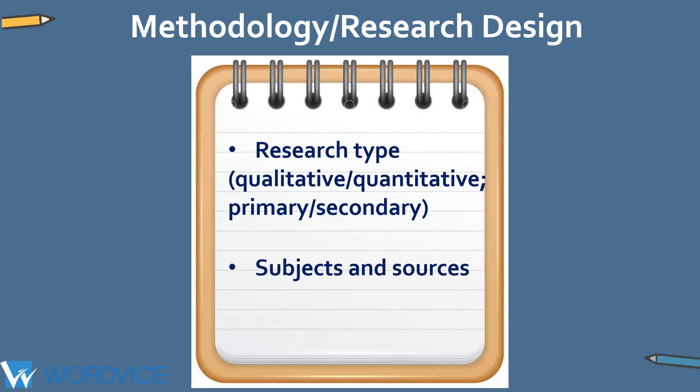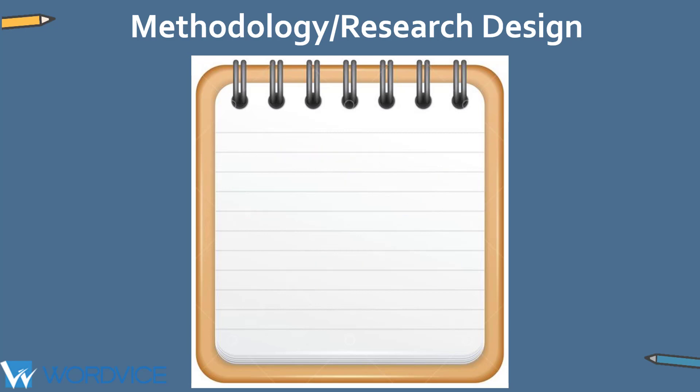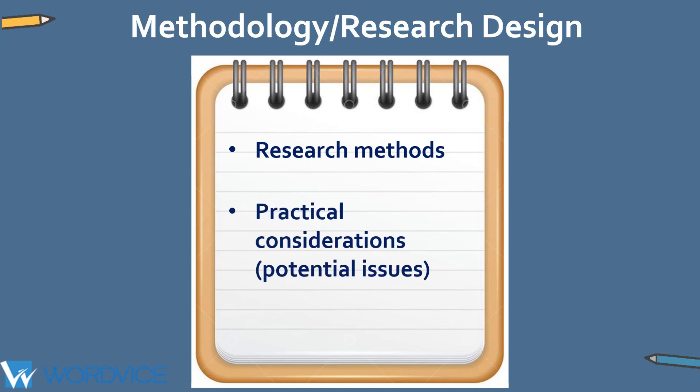Subjects and sources: describe who or what you will actually study and give some details about these subjects and where they were sourced. Research methods: list the tools and procedures your study will employ. Practical considerations: give any foreseeable obstacles due to time scale or resources required.